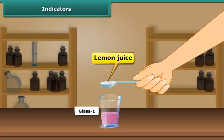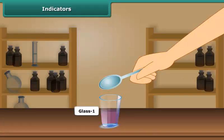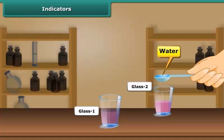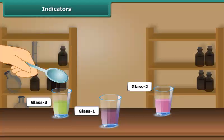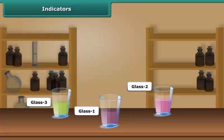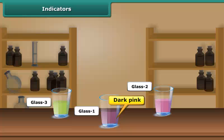Pour lemon juice in the first glass, water in the second glass, and soap solution in the third glass. What do you see? You can notice that in glass 1, the color changes to dark pink. Lemon juice is acidic in nature, so there is a change in the color of the indicator.